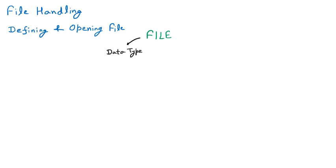For the FILE data type, we are going to create one object or pointer — we say FILE star fp. Just like if I have to create an integer pointer we say int star a, so a is the integer pointer; similarly fp is the file pointer. We can say fp is the file pointer.